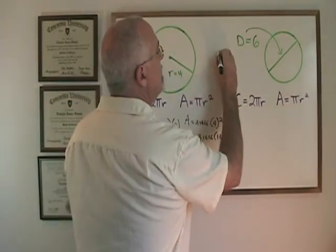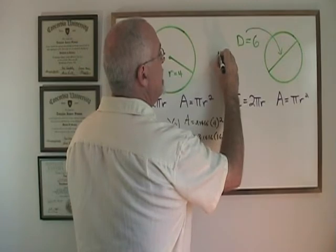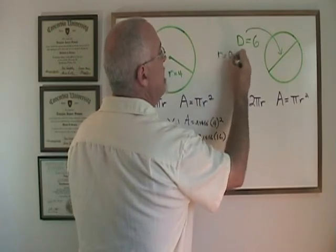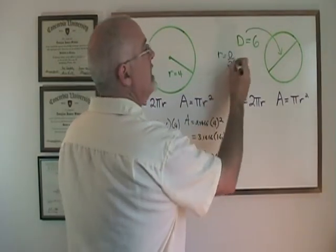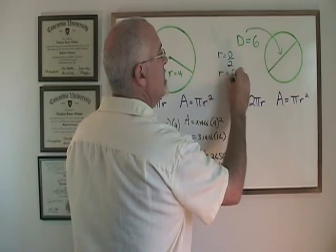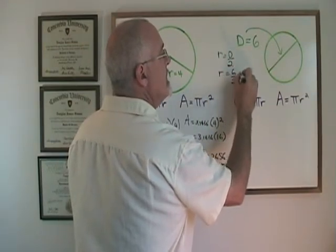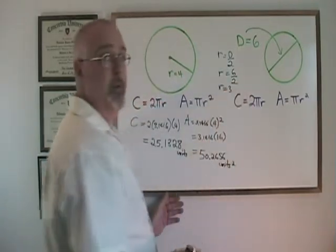In the formula, r equals d over 2. In this case, radius is equal to 6 over 2, which gives me radius of 3 units.